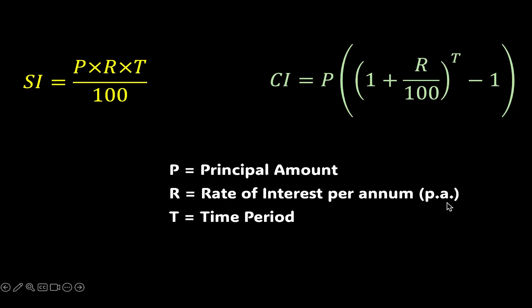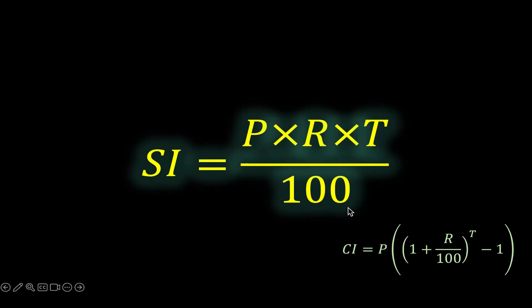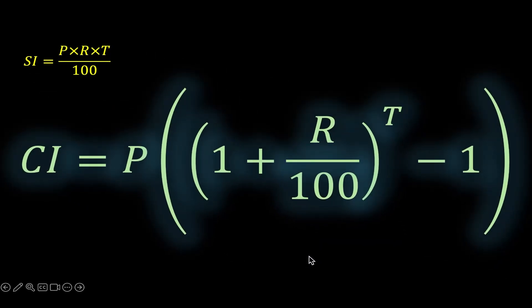Usually denoted by the shorthand PA, and T stands for time period. For our discussion, let's consider it in years. But you might be wondering why these two look so drastically different. We will find that out in this video but before that, some context.